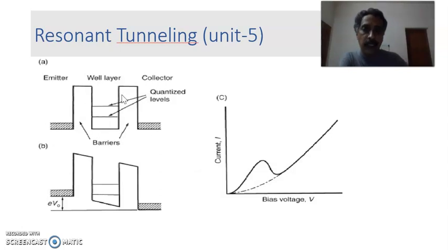The well layer, the quantum well layer, is made up of gallium arsenide, whereas the two barriers here are made up of aluminum gallium arsenide which has a greater barrier height. So when resonance happens, the incident electron tunnels through the well layer as it tunnels through the first barrier, the well layer, the second barrier, and reaches the collector. This you call it as the resonant tunneling.